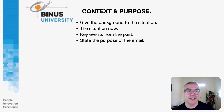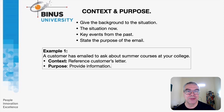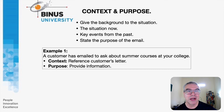Here's example one — a fairly simple example. A customer has emailed to ask about summer courses at your college. If you reply, the context is that you need to give reference to the customer's previous letter or email, and then your purpose is to provide information. At this point you don't need to give the information — that is in section two of your email. Just state the purpose of the email.